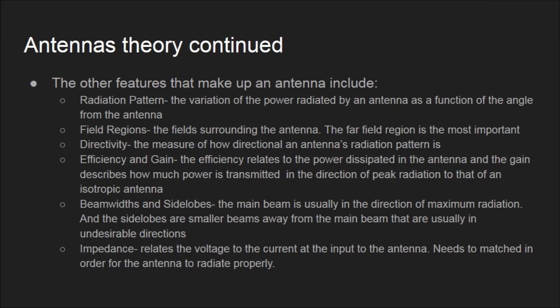The other features that make up an antenna include radiation pattern, which is the variation of power radiated by the antenna as a function of the angle from the antenna. The field regions, which are the fields surrounding the antenna, with the far field being the most important. And directivity, the measure of how directional an antenna's radiation pattern is.